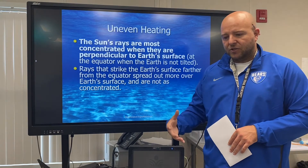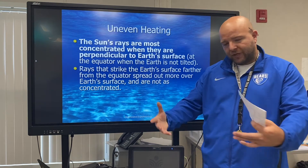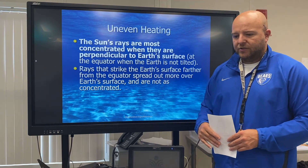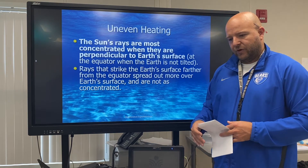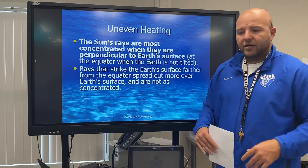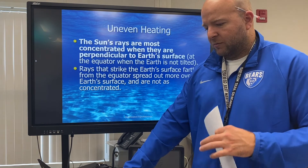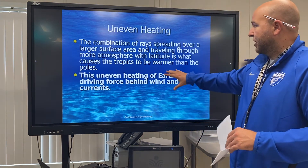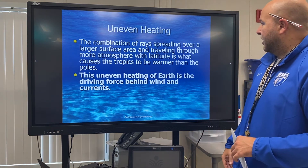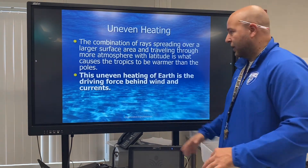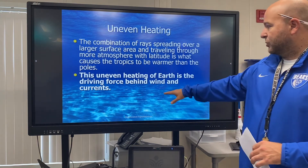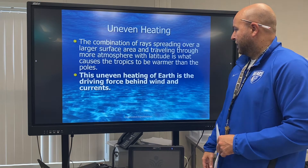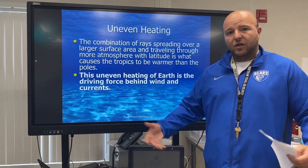The Sun's rays are most concentrated when they are perpendicular to the Earth's surface. The rays that strike farther from the equator spread out more. The Sun's rays are most concentrated when perpendicular to Earth's surface. The combination of rays spreading over a larger surface and traveling through more atmosphere with latitude is what causes the tropics to be warmer than the poles. Most importantly: this uneven heating is the driving force behind wind and currents.